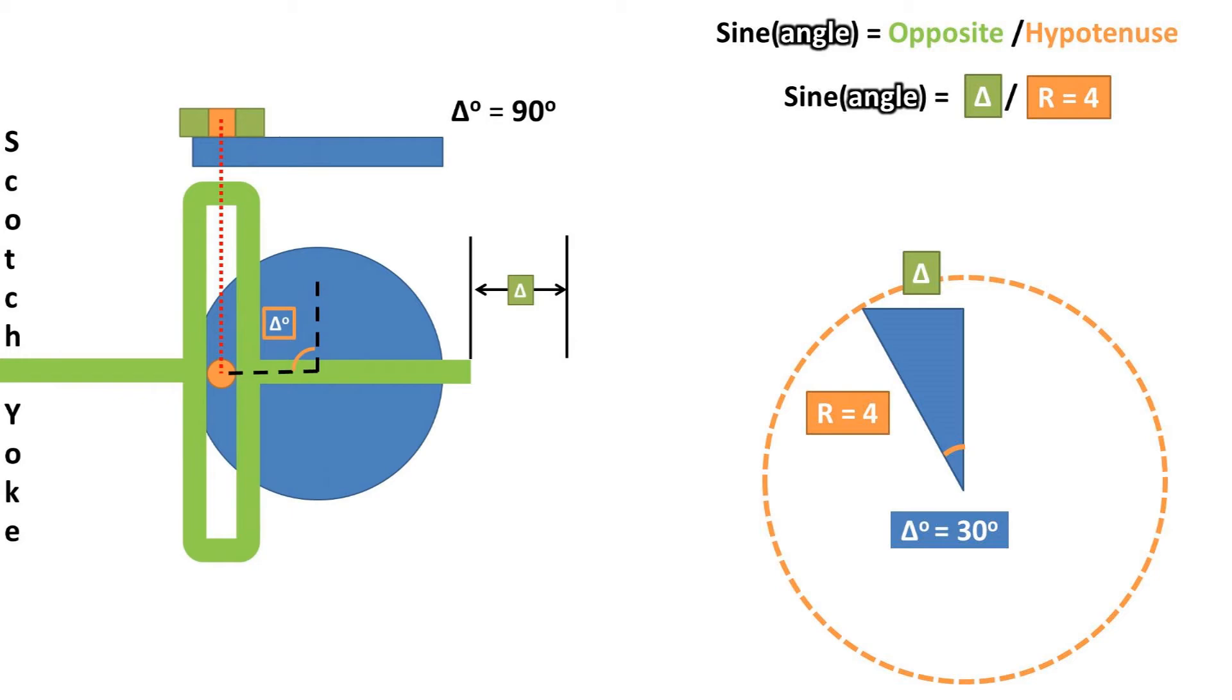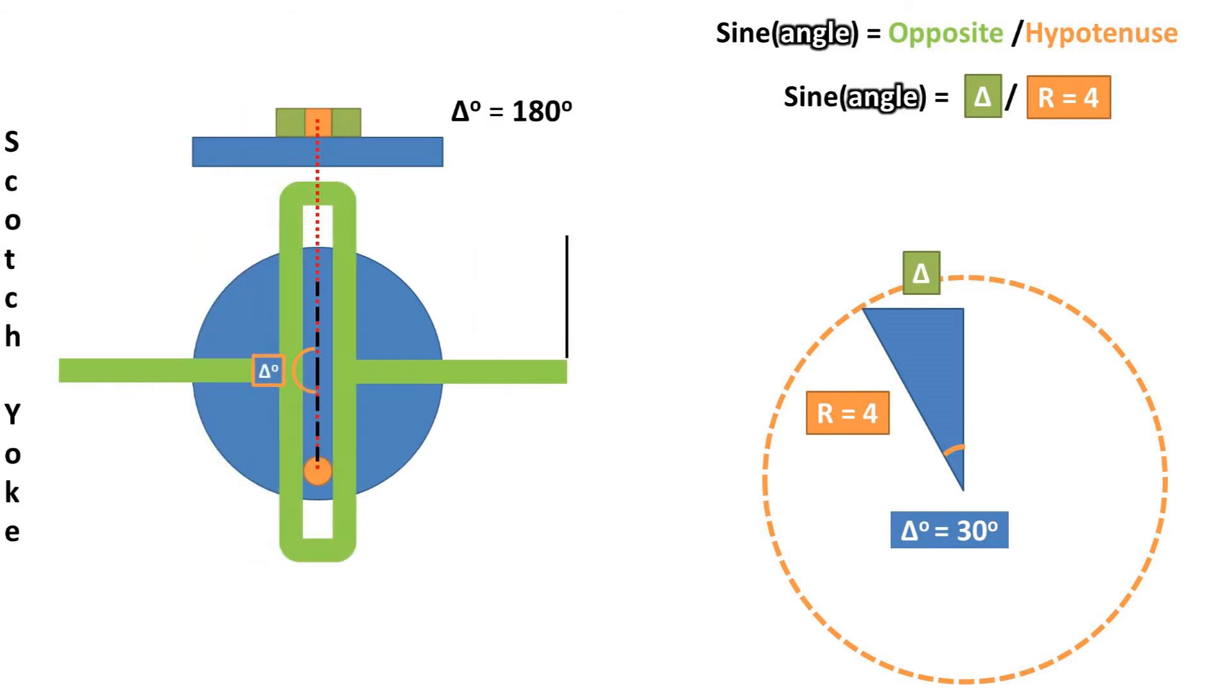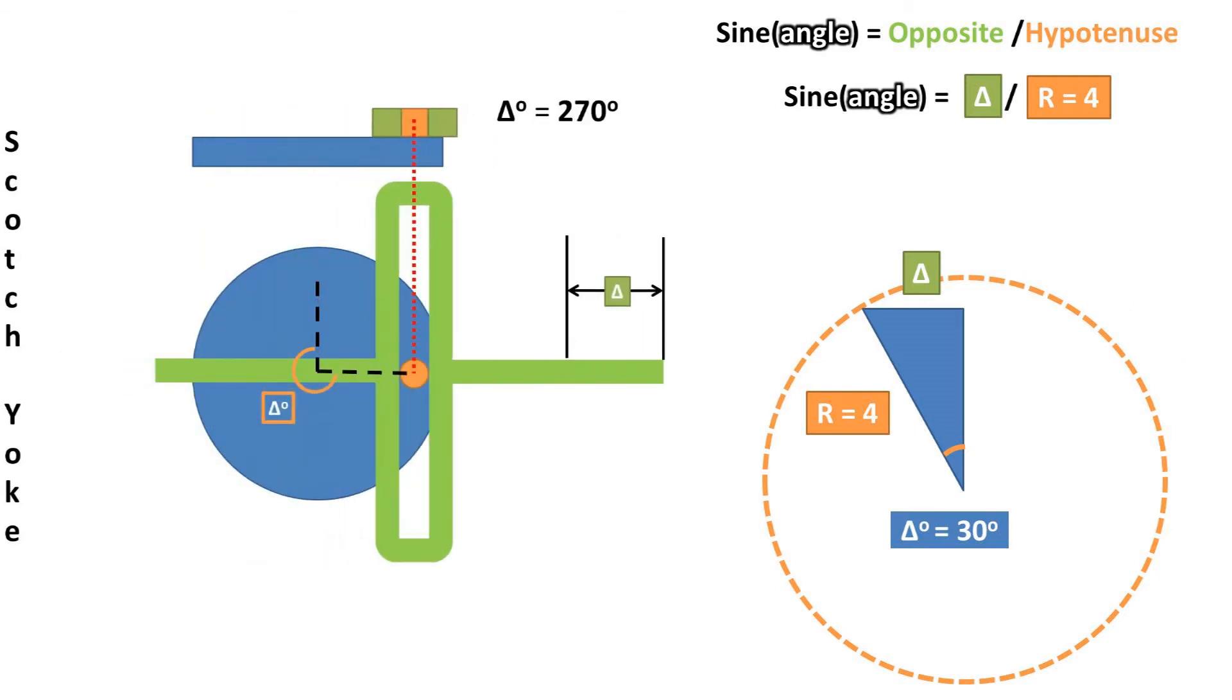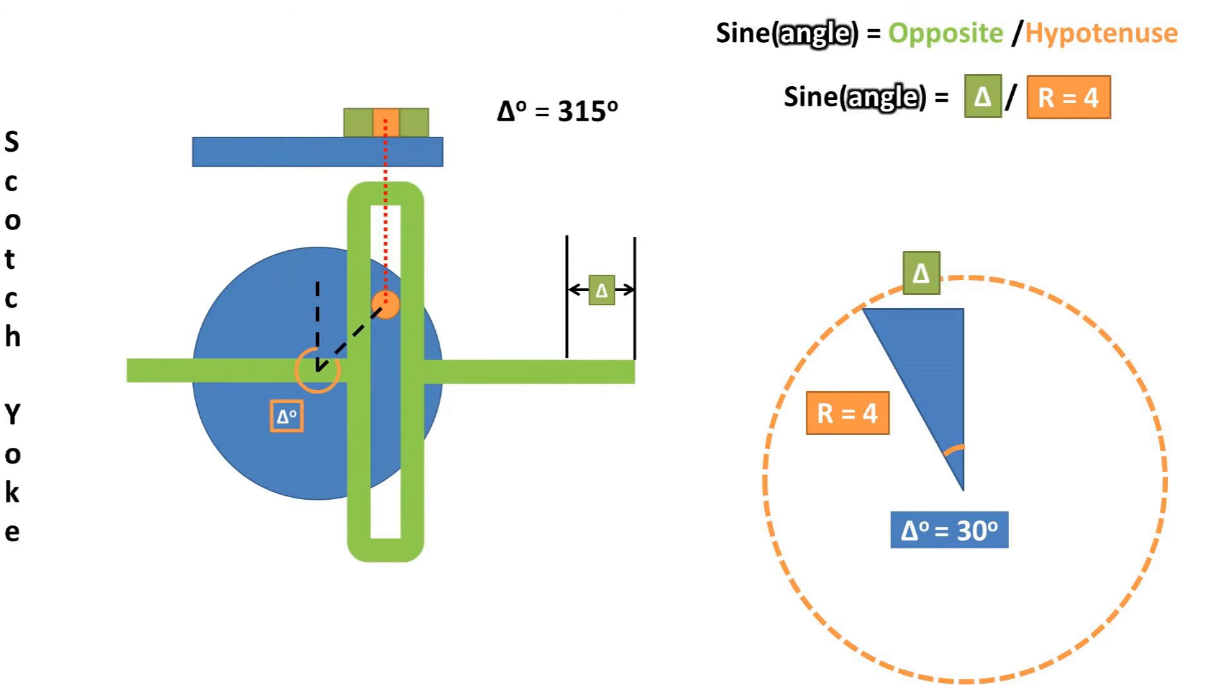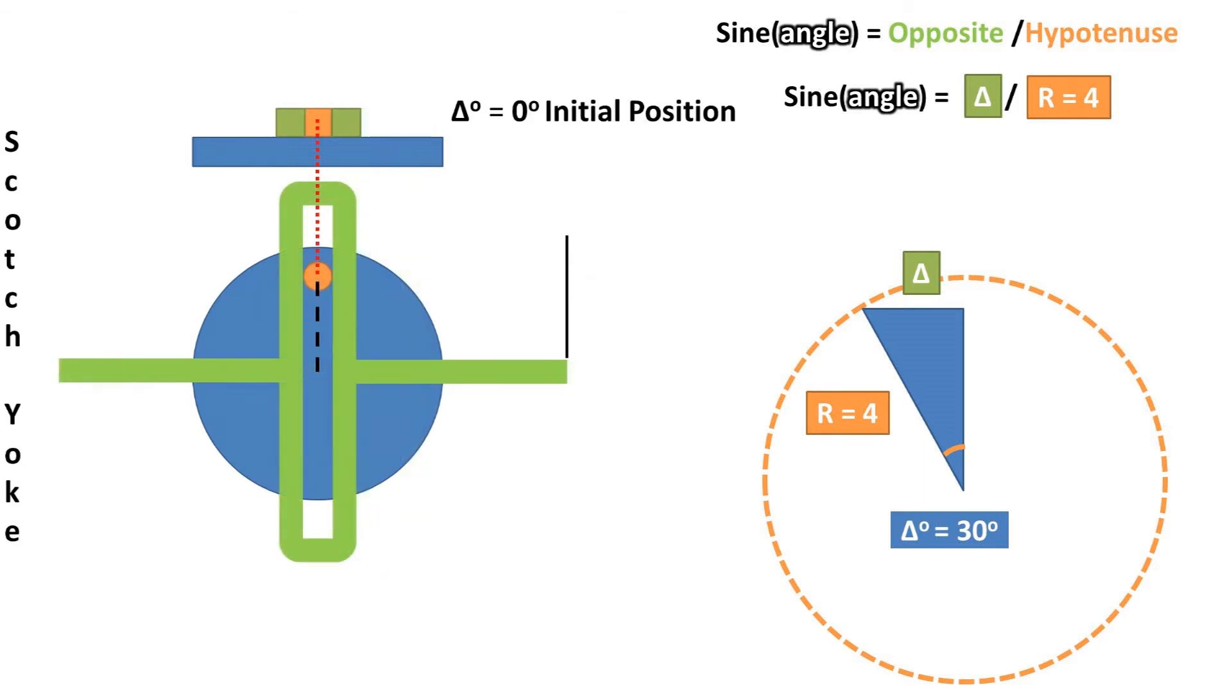So we'll use the SO in the SOH CAH TOA property of right triangles, which stands for the sine of the angle is equal to the opposite side of that angle over the hypotenuse or longest side.